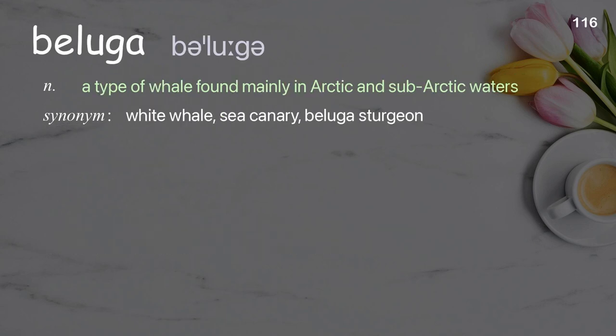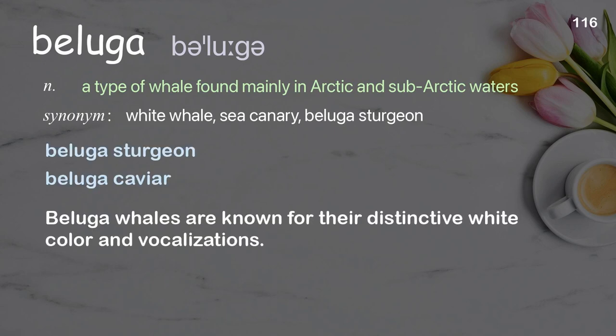Beluga: a type of whale found mainly in arctic and subarctic waters. Examples: beluga sturgeon, beluga caviar. Beluga whales are known for their distinctive white color and vocalizations.